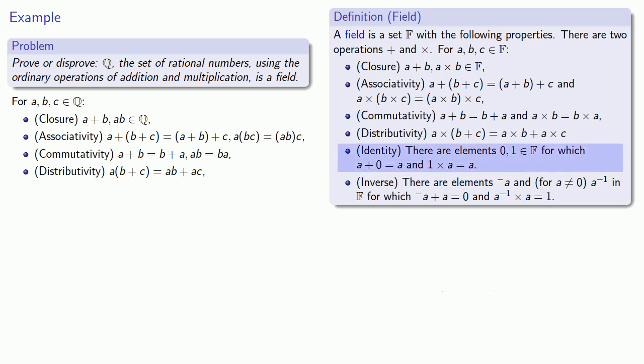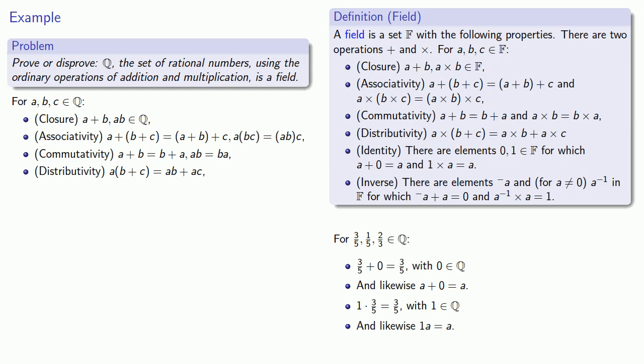What about our identity elements? Since we're using ordinary addition and multiplication, zero and one under ordinary addition and multiplication seem to fit this requirement of being identities. Three-fifths plus zero is in fact three-fifths. And importantly, zero is an element of the rational numbers. Likewise, one times three-fifths is three-fifths, and our multiplicative identity one is a rational number. One important thing to emphasize here is that it's not enough that the additive and multiplicative identities exist. They must be part of our set.